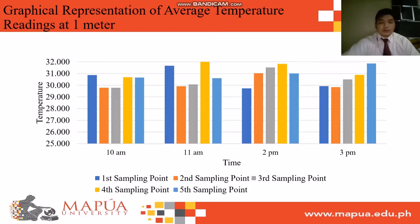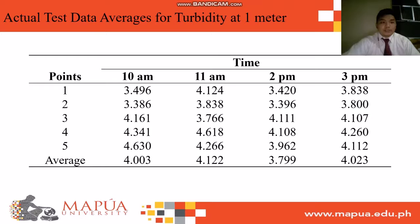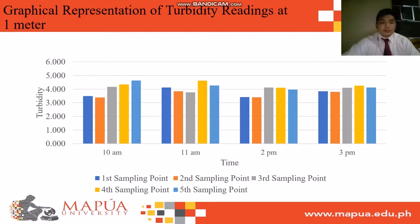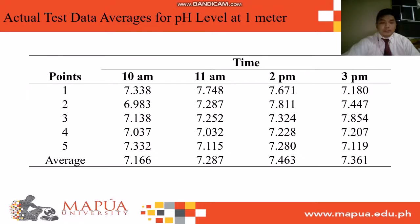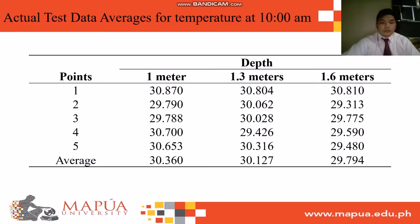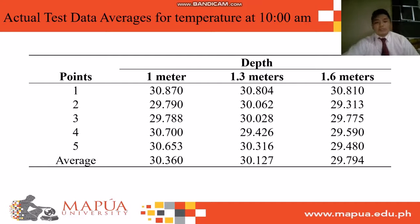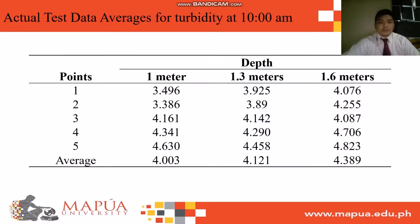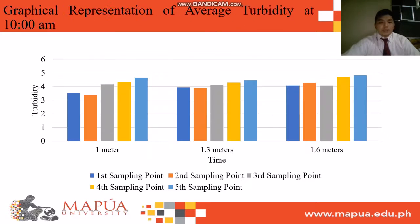Here is the graphical representation of the temperature table, followed by actual test data averages for turbidity at 1 meter. The graphical representation for pH level at 1 meter is also shown. The next tables compare measured water quality at different depths for different sampling points taken at the same sampling time, using the average of 10 trials per depth. Other data for different times can be seen in Appendix M. Here is the actual test data averages for temperature at 10 AM and its graphical representation, and for turbidity at 10 AM and its graphical representation.